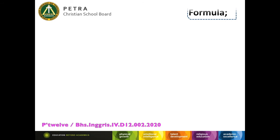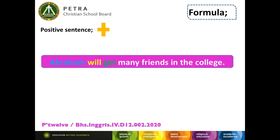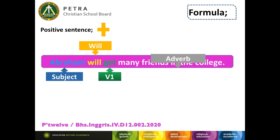Let's talk about the formula. First, positive sentence. Look at the sentence: Abraham will get many friends in college. Abraham is the subject. Will is a modal, and a modal is always followed by verb one or verb base.